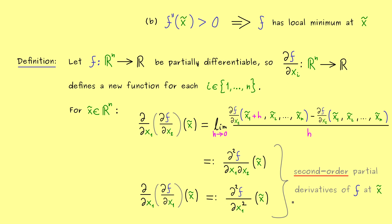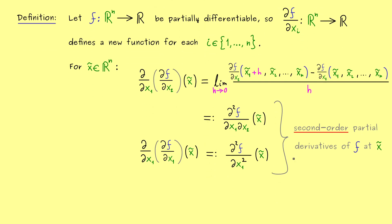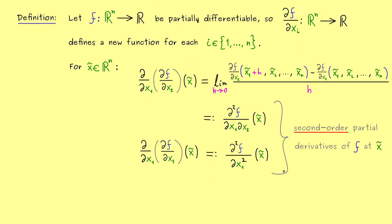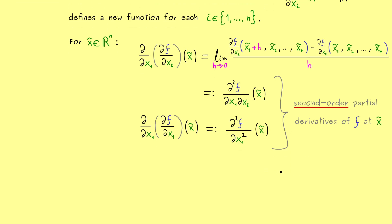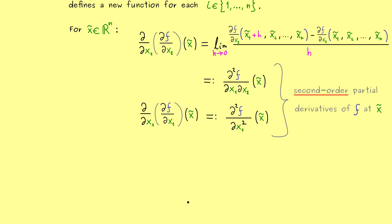By knowing this, you shouldn't have any problems going to even higher-order partial derivatives, which we will need when discussing Taylor's theorem in the multivariable setting. Here we first focus on second-order partial derivatives. One important thing: in general the order matters — changing the order of partial differentiation can give a completely different result. However, in many applications and examples the order does indeed not matter, which is an important theorem we will discuss in another video.